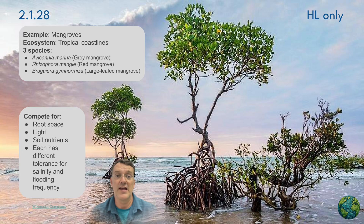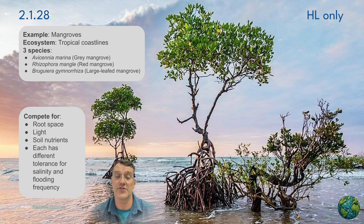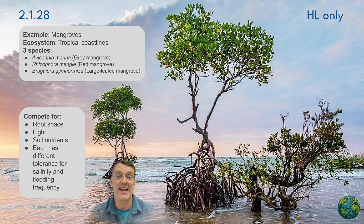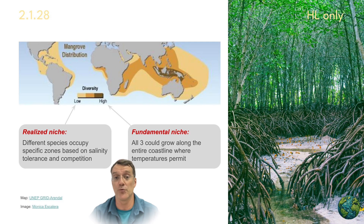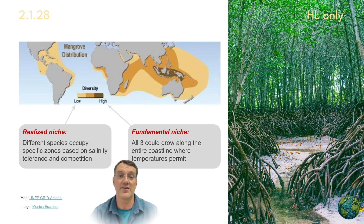Moving to tropical coastlines, different mangrove species like Avicennia marina, Rhizophora mangle, and Bruguiera gymnorhiza could potentially grow anywhere along the coast — again, that's their fundamental niche. However, all three species compete for root space, light, and nutrients. And when you combine that with different tolerances for saltwater, this creates distinct zones where each species is found. Each of these mangrove species' realized niche is a specific band along the shoreline where it has competitive advantages over the other two species.